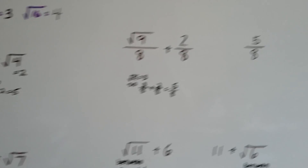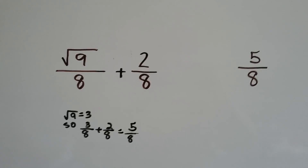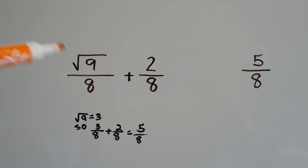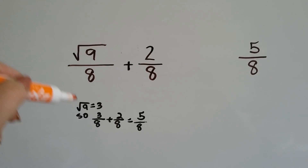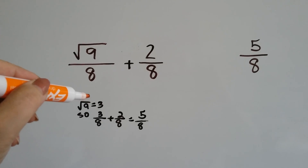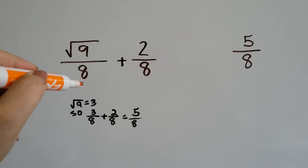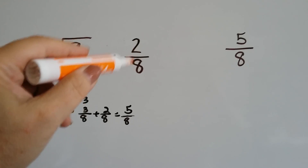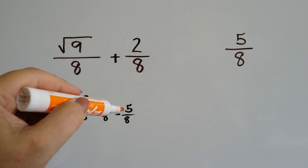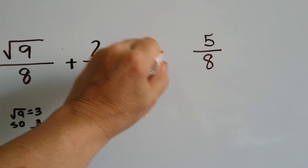Even when a square root appears in a numerator: the square root of 9 is 3, so we know that gives us 3 eighths. 3 eighths plus 2 eighths is 5 eighths, so we know those two are equal.